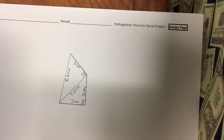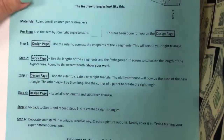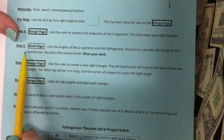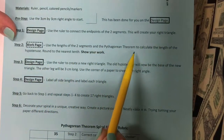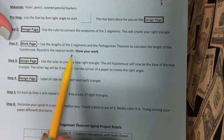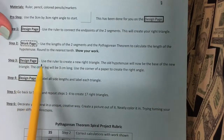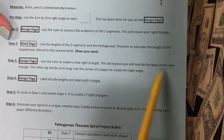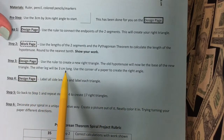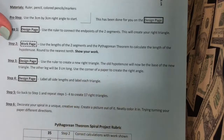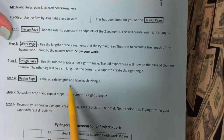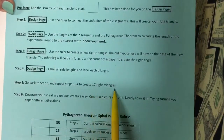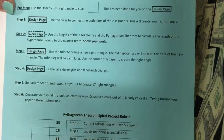Let me go back to the directions to show what's happening here. We started by connecting the endpoints, showed our work, used the length of the two segments in the Pythagorean Theorem to calculate the length of the hypotenuse, and rounded to the nearest tenth. Back on the design page, we used the ruler to create a new right triangle — the old hypotenuse becomes the base of the new triangle, the other leg is 3 centimeters, and you use the corner of a paper or ruler to create your right angle. Label all side lengths and label each triangle, then repeat. We're going to make 17 triangles total.